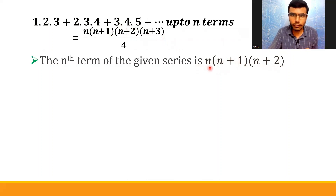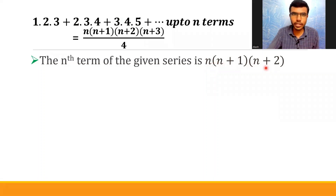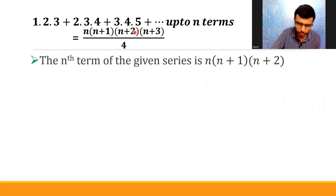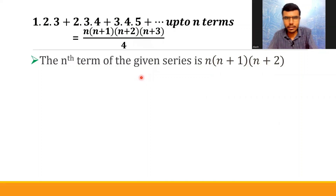You can just check it. If you put n as 3, you would get 3×4×5. That's what the third term is. So that's how I got this nth term.